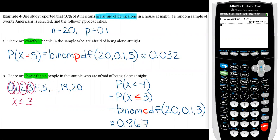So you would do 2nd, FAR, up or down to binomial CDF. Remember, CDF is what you use whenever you have the less than or equal to case. And our trials is still 20, probability still 0.1, and the x value is now 3.